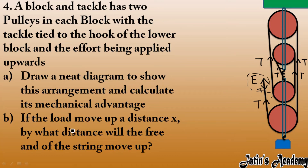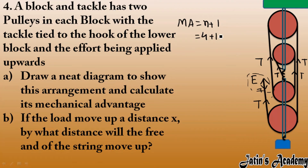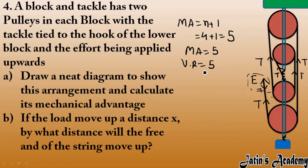Next, mechanical advantage: we have four pulleys, so ideally the answer would be four, but due to the inconvenient direction, mechanical advantage is n+1, which is 4+1 = 5. So the mechanical advantage of this system is 5. Assuming 100% efficiency, the velocity ratio is also 5.